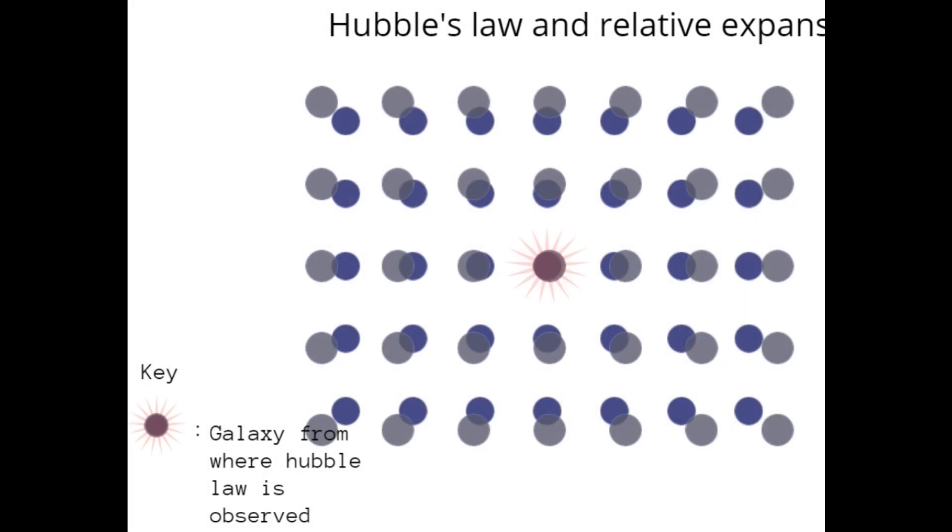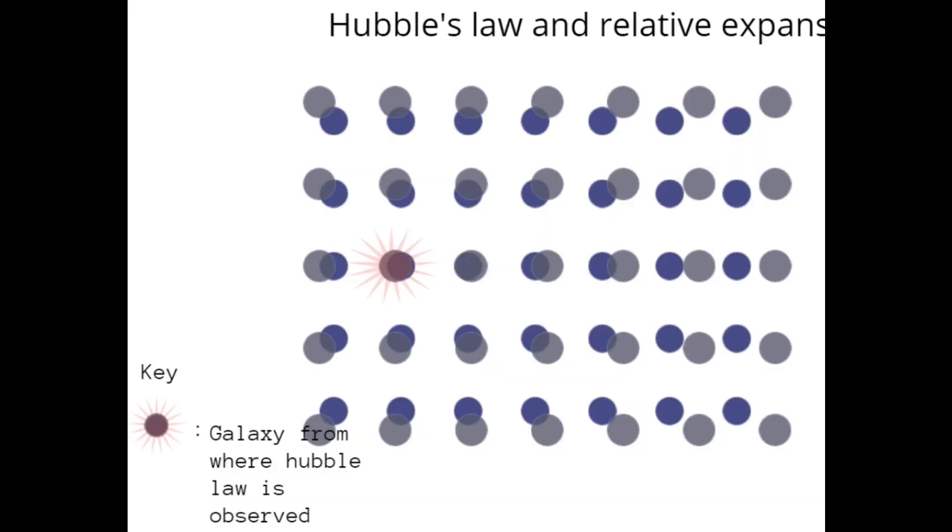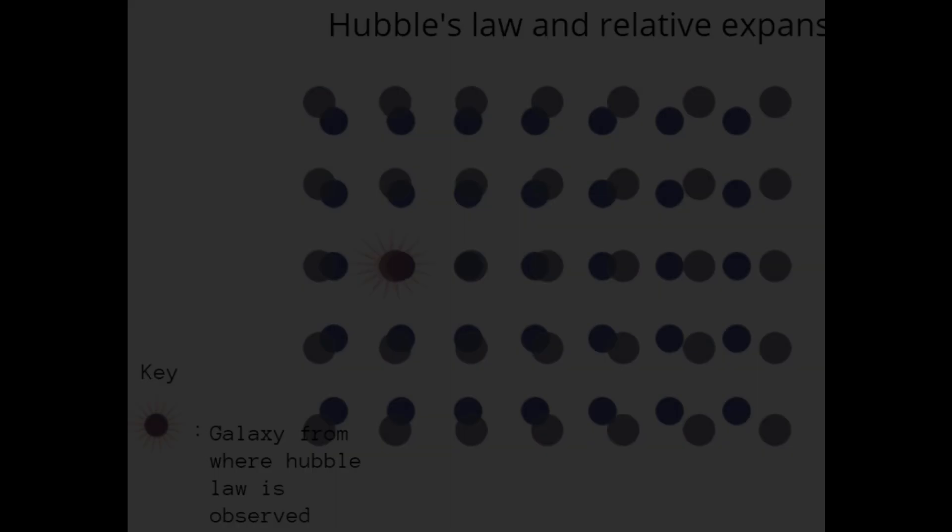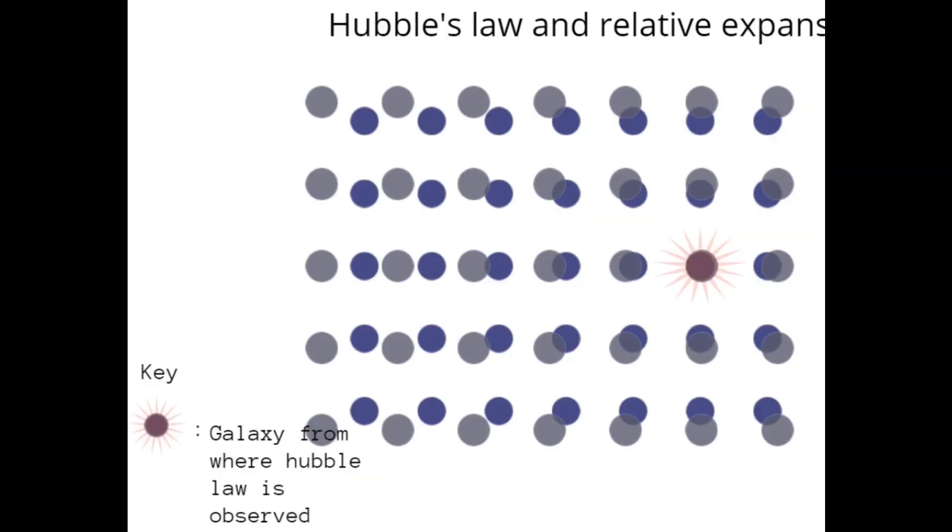The blue dots represent galaxies in an unexpanded universe, while the grey dots represent galaxies in an expanded universe. And when we overlap the two, we can see the blue dots on the corner are displaced more than those that are in the center.